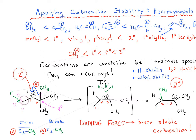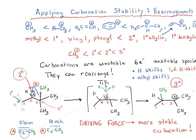Here's an example where we start with a secondary carbocation, and through moving this alkyl group — this methyl group, CH3 — we end up with a tertiary carbocation, and the original carbon becomes a neutral carbon. So we're forming and breaking a carbon-to-CH3 bond.